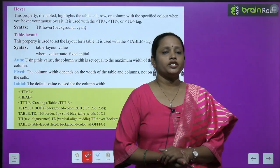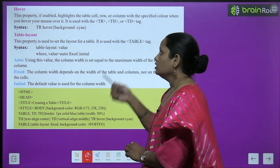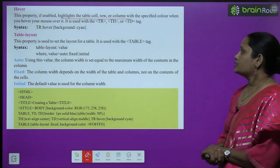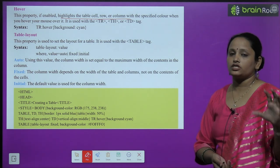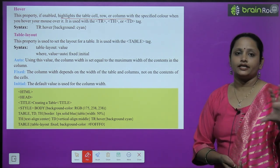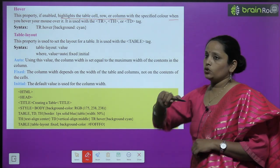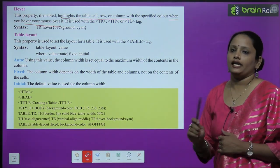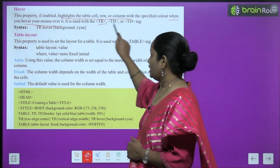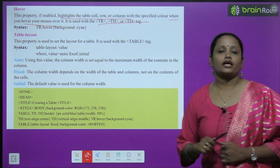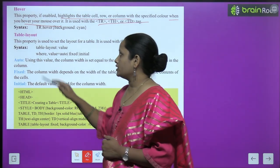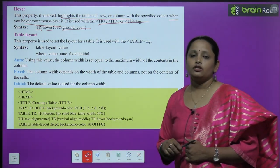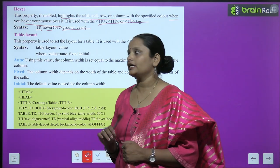Next comes hover. This property enables highlighting of the text, cell, row or column with a specified color when you hover your mouse over it. It is used with the tr, th, or td tags. The syntax is: tr:hover { background: cyan; } — so cyan color is used in the background, and whenever you hover your mouse over this text, you will see the cyan color appear.